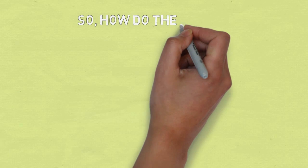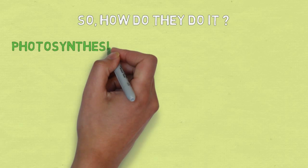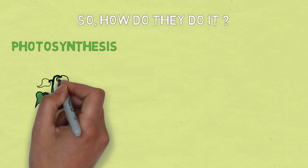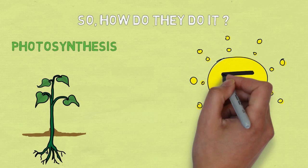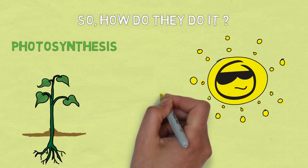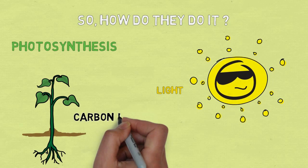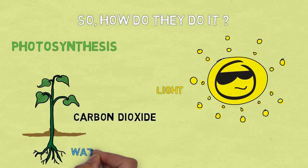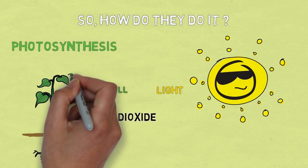So how do they do it? The answer is photosynthesis. It takes light from the sun, carbon dioxide from the air, and water from the ground, and uses chlorophyll on the leaves to produce oxygen.